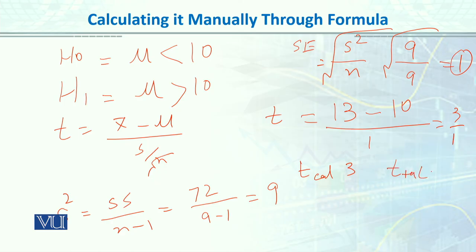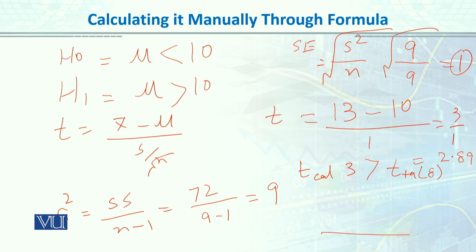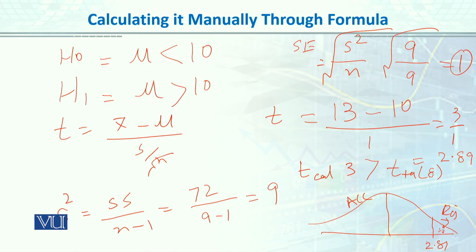The t table value at degrees of freedom 9 minus 1 equals 8, at alpha 0.05, one-tail, gives a critical value of 2.89. Our calculated t of 3 is greater than 2.89. When our value is greater, it falls in the critical rejection region. For the one-tail test, the critical value is 2.89, and 3 falls in the rejection region beyond it. This means we reject the null hypothesis.